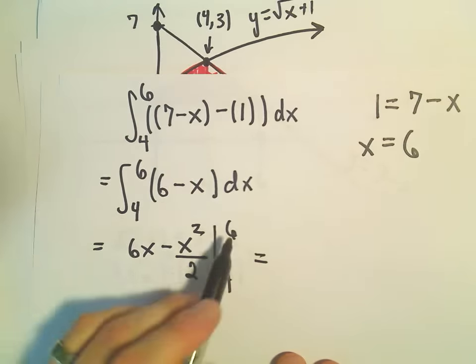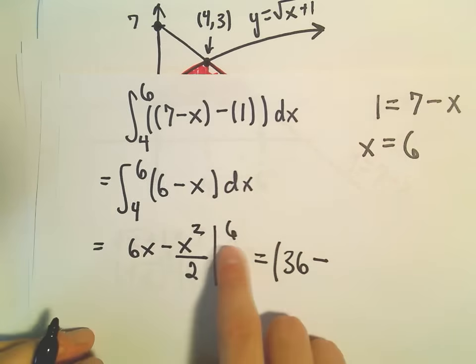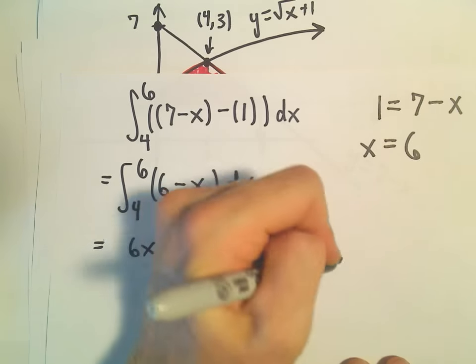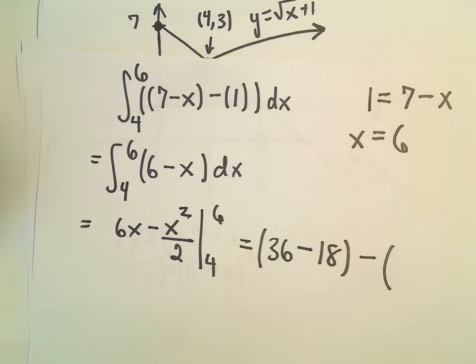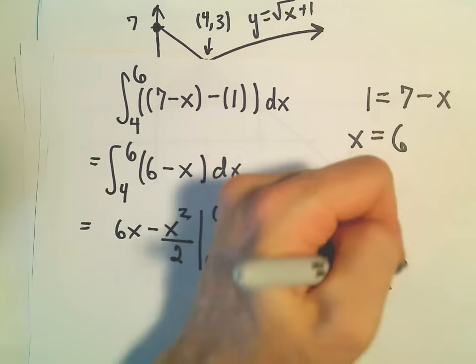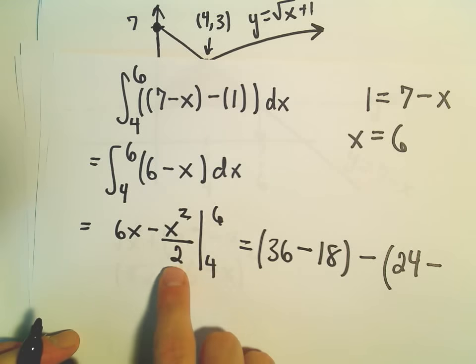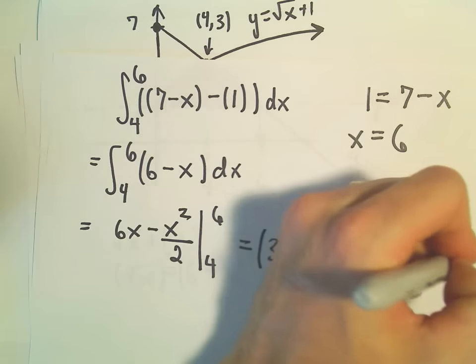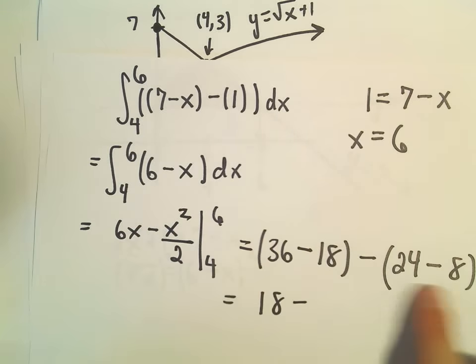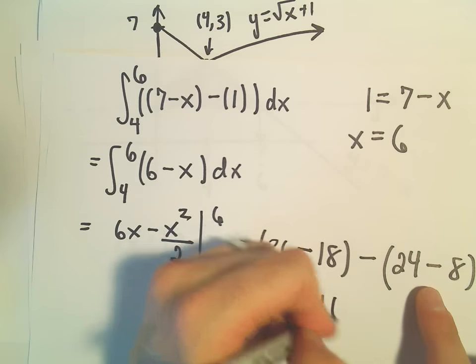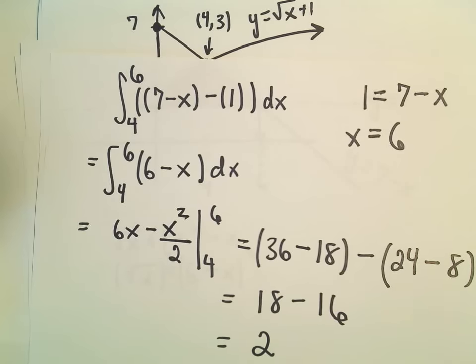So here when we plug things in, we'll get 6 times 6, which is 36. We'll plug in 6 and square it. That will be 36 over 2, which will be 18. That will be our upper limit. And then when we plug in 4, we'll get 6 times 4, that's 24. We'll get 4 squared, which is 16, divided by 2, which is going to give us 8. 36 minus 18 is 18. 24 minus 8 gives us 16. Well, 18 minus 16 gives us a value of 2.